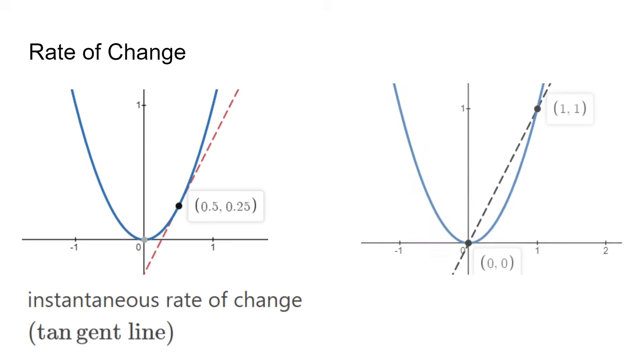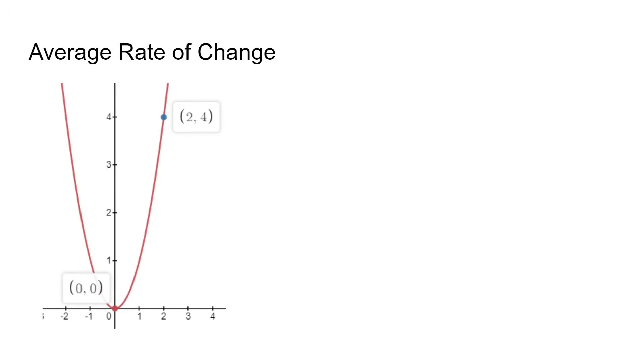The average rate of change refers to the secant line, which finds the slope from one point on the graph to another point. A common question will ask us to calculate the average rate of change between two points or estimate the derivative at one point using points around it.